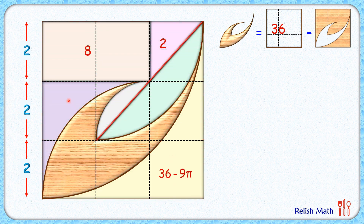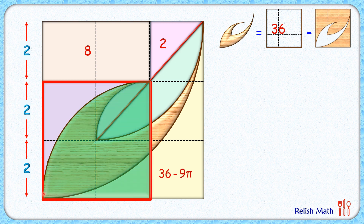Now let's see the area of this purple region. The approach is the same: it is the area of this red square minus the area of this green quadrant. The red square has side length 4 centimeters, so its area is 16 centimeter square.